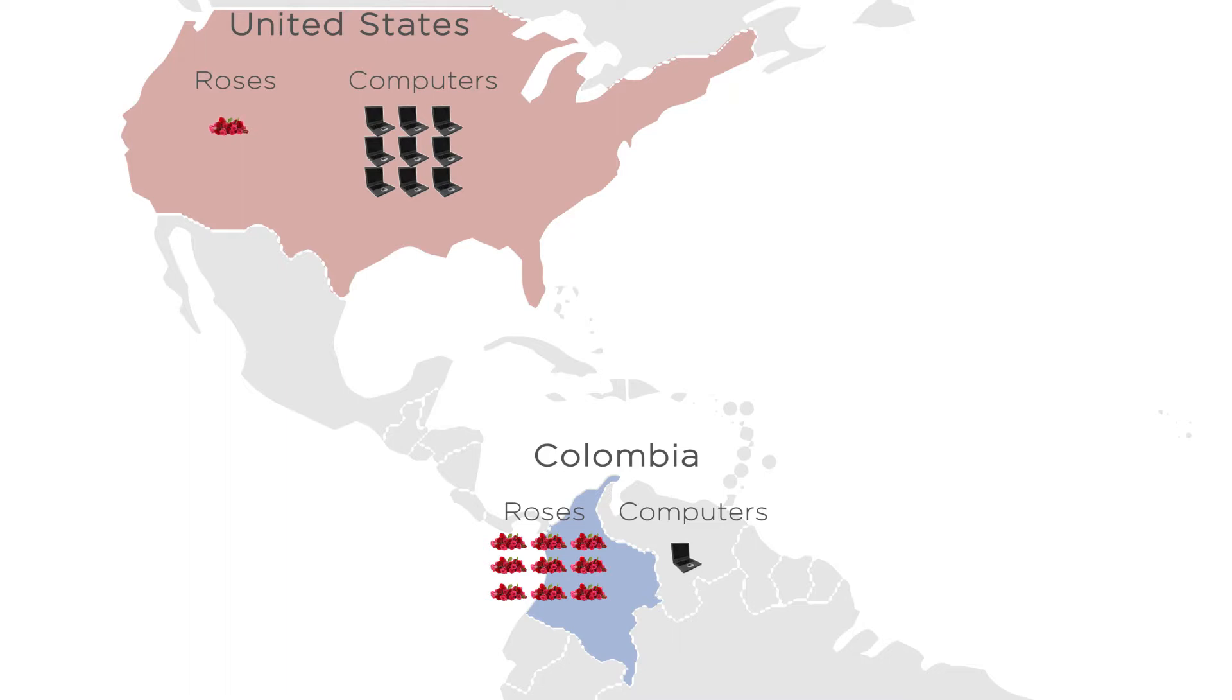Now it turns out that it's very costly for the U.S. to grow roses in February, but it's cheap for Colombia. At the same time, it's cheaper for the U.S. to produce computers than it is for Colombia, because the U.S. has a bigger skilled labor force and better technology for computer production.